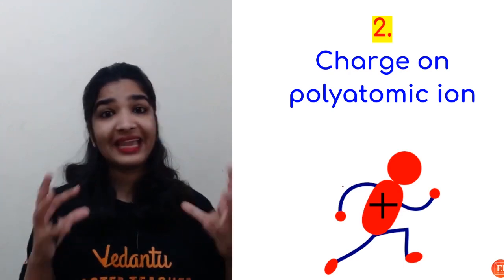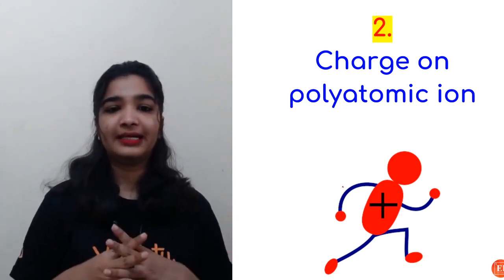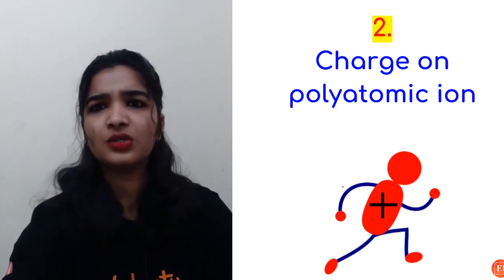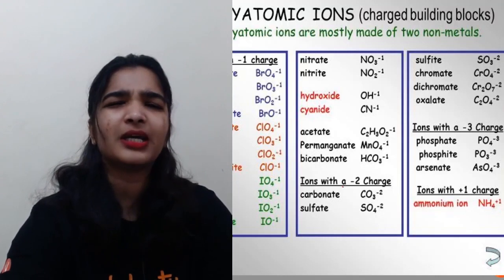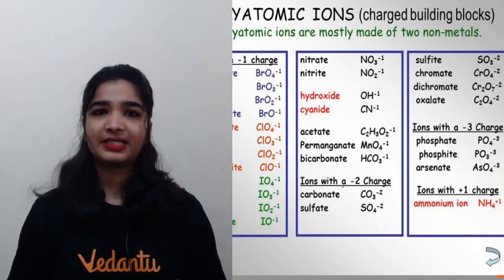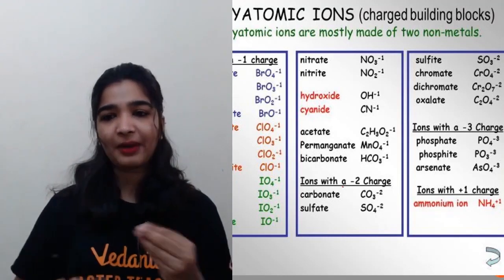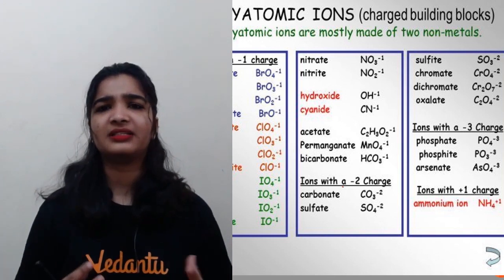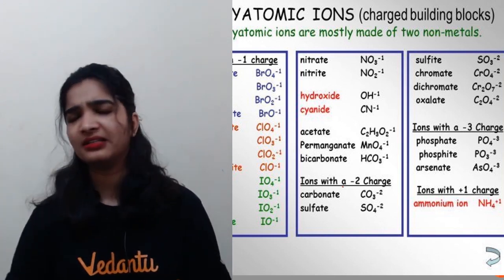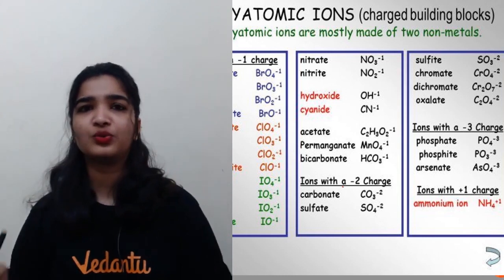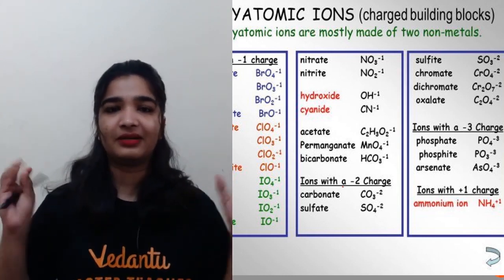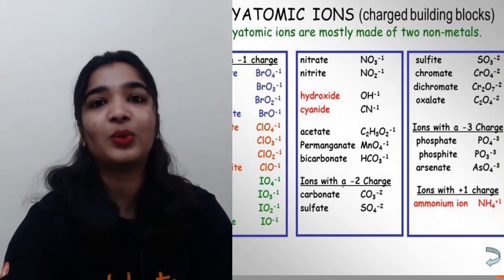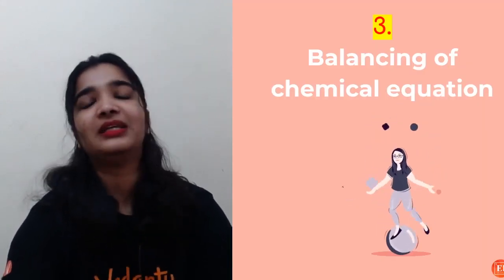The second thing is knowing the charge on polyatomic ions. Determining the valency of elements is easy based on valence electrons, but for polyatomic ions you have to memorize them. With practice, things like cyanide CN⁻, ammonium NH₄⁺, and sulfate SO₄²⁻ will be stored in your head naturally — but you do have to practice a lot.